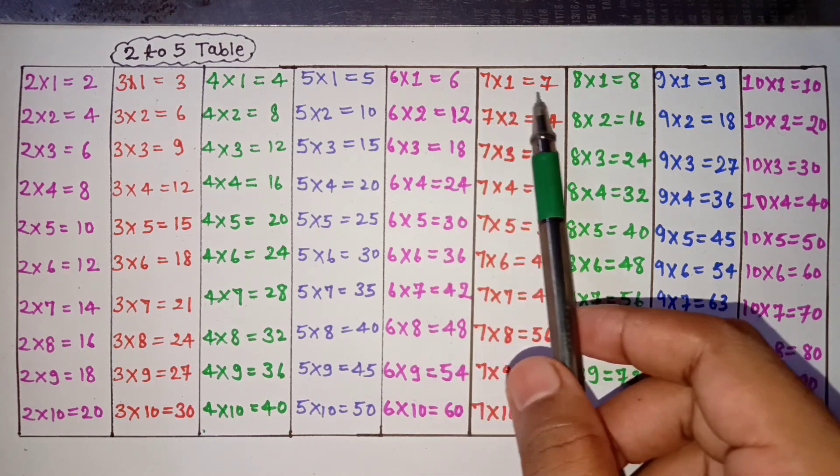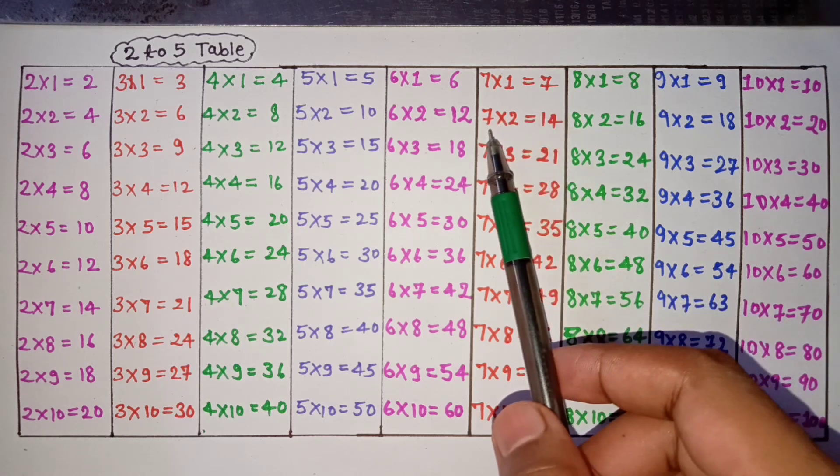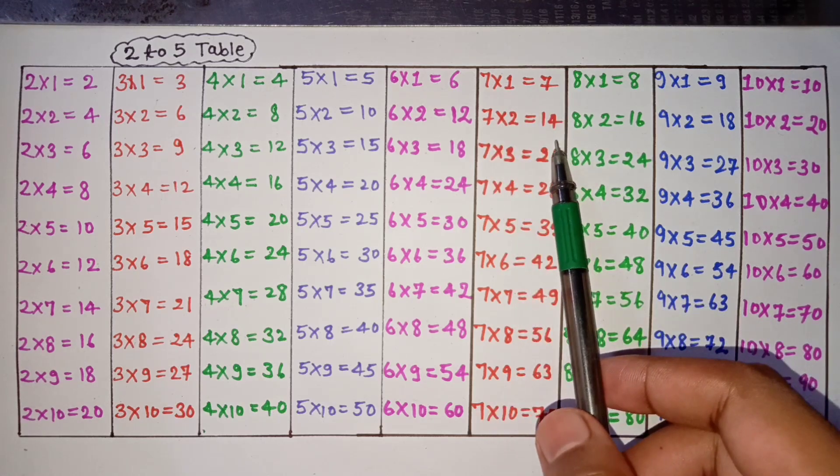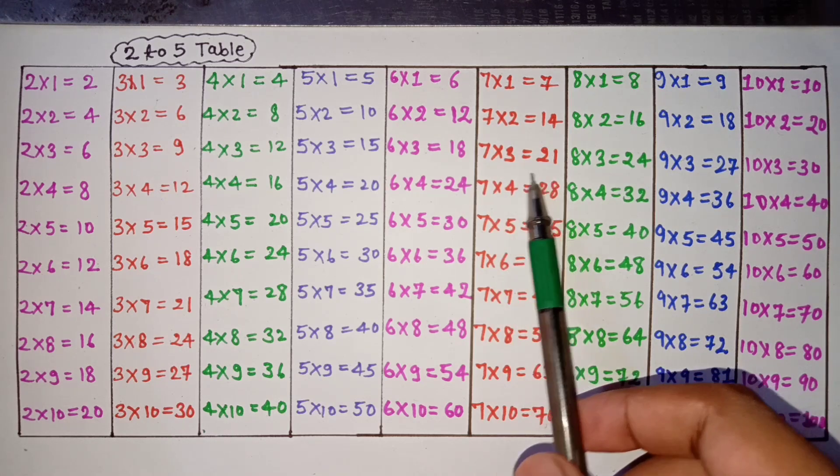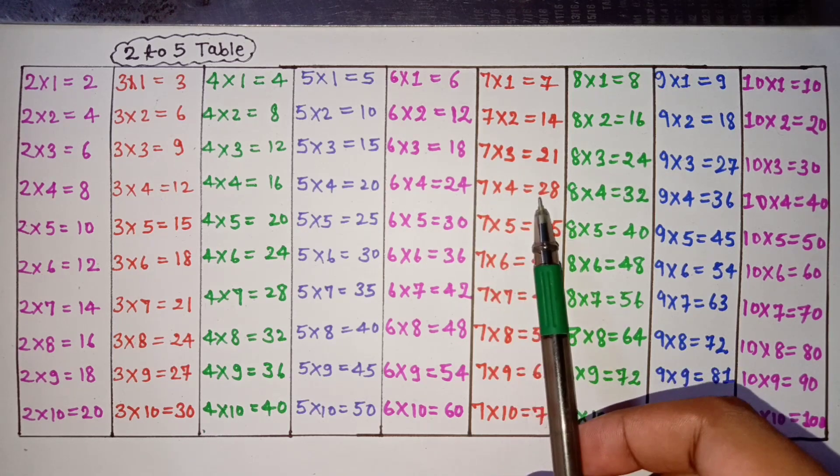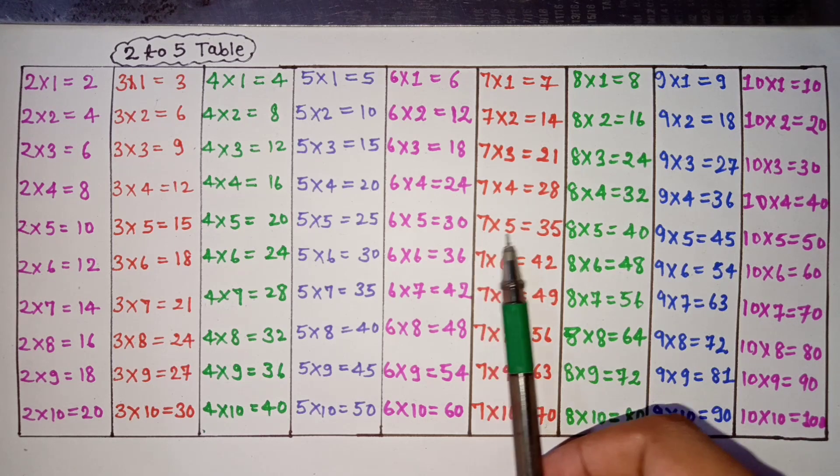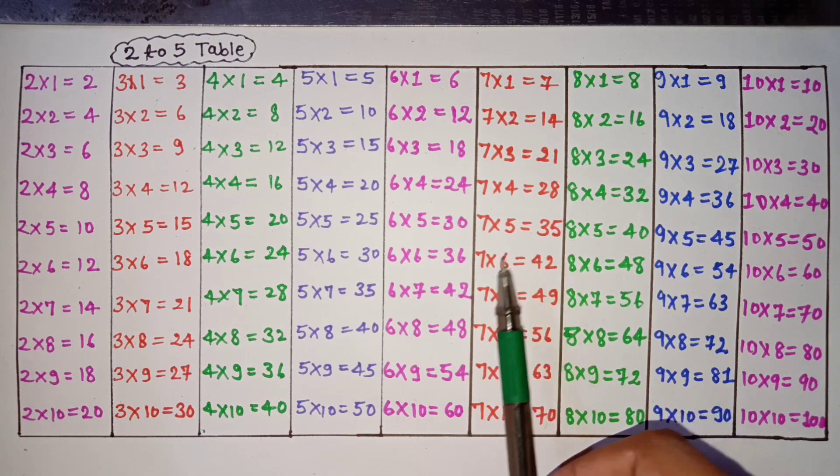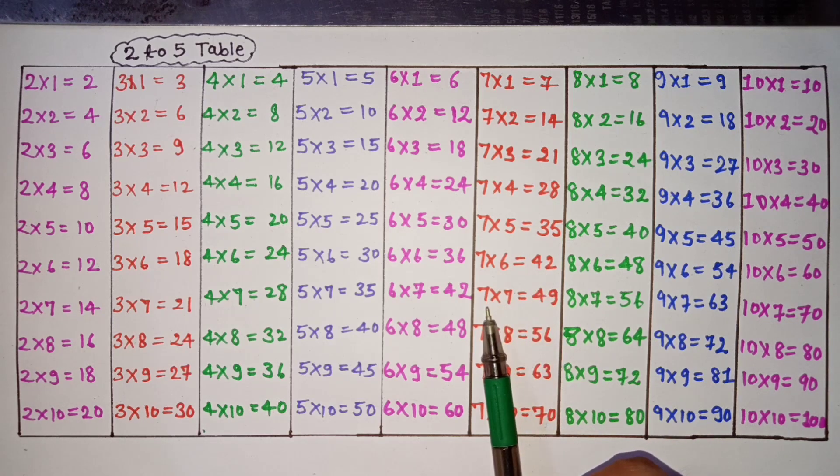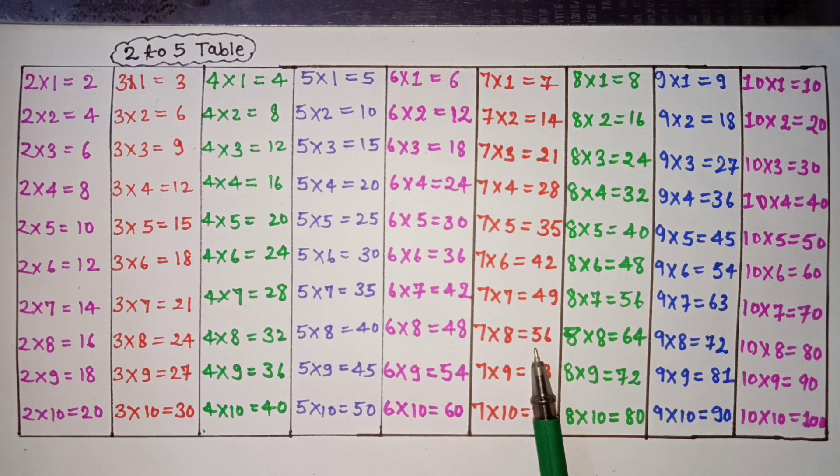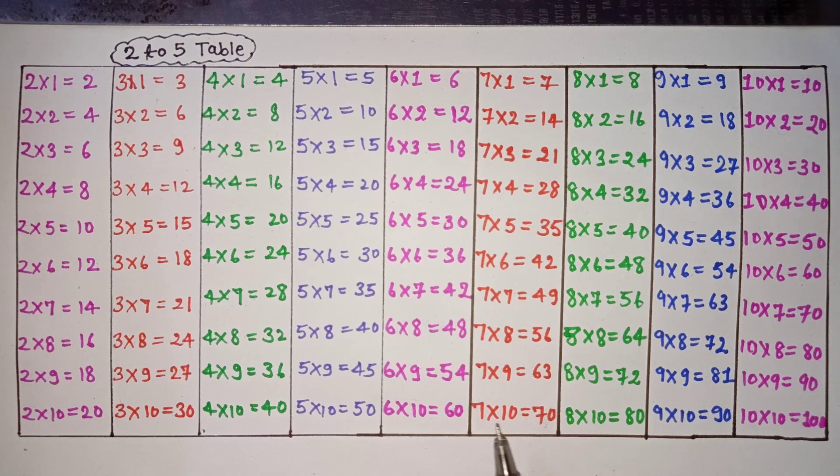7 ones are 7, 7 twos are 14, 7 threes are 21, 7 fours are 28, 7 fives are 35, 7 sixes are 42, 7 sevens are 49, 7 eights are 56, 7 nines are 63, 7 tens are 70.